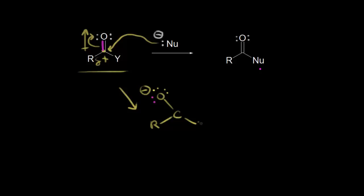On the right we have our Y substituent, and now our nucleophile is bonded to our carbon. These electrons in blue attacked our carbonyl carbon and formed this bond. To go from our tetrahedral intermediate to our final product, we must reform our carbonyl. These electrons move in, and that pushes these electrons off onto our Y substituent.